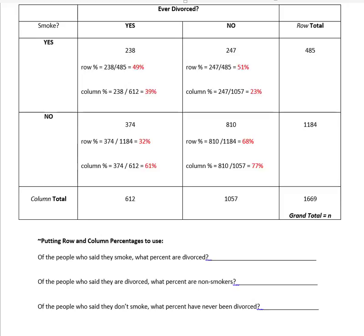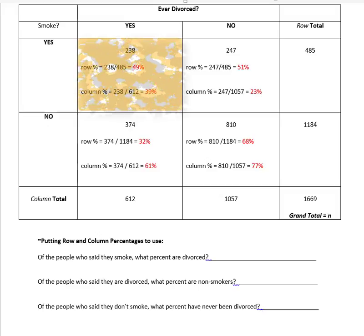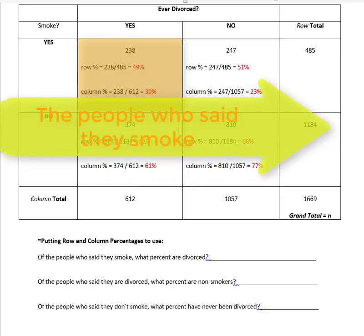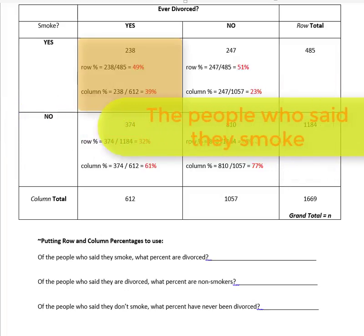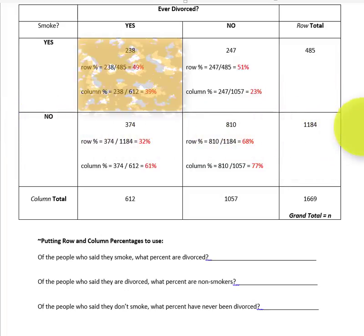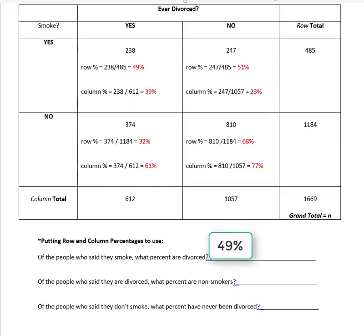It's easy to figure out what cell that is — smoking is yes and divorce is yes, so the cell is yes/yes. But do you want the row percent or the column percent? Since the question says 'of the people who said they smoke,' that's focusing on just the row of smokers, so I would use the row percent, which gives 49%.